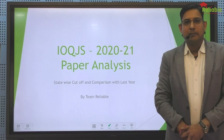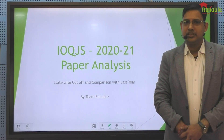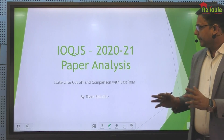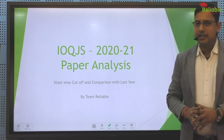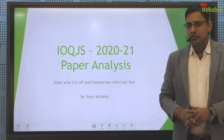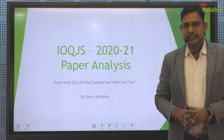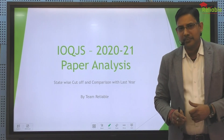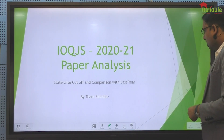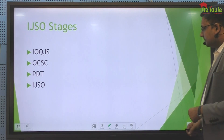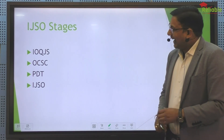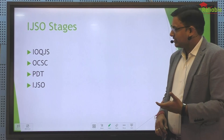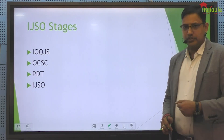Hello students, my name is Yatish and today we are going to discuss the paper analysis of IOQJS 2021. So let's see how many stages of IOQJS there are this time. The first stage is called OCSC, PDT and IJSO.